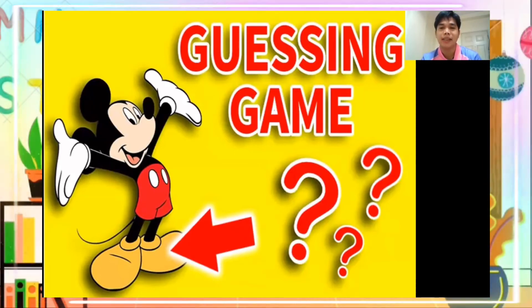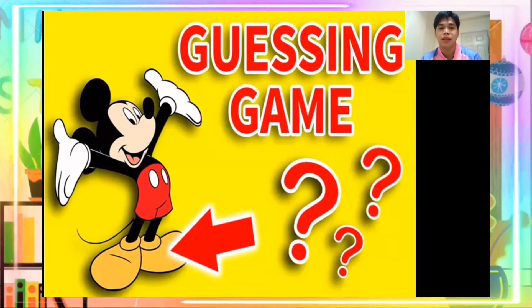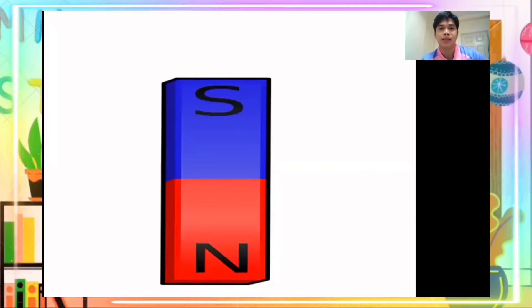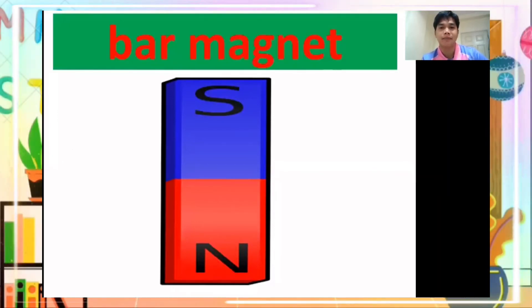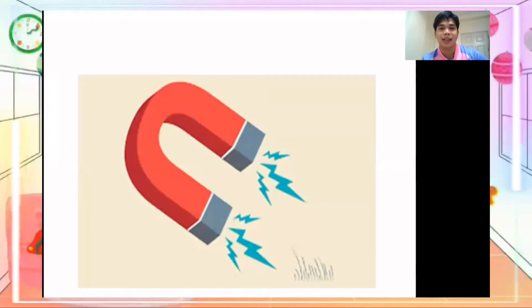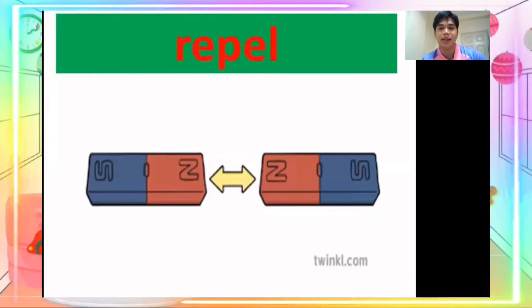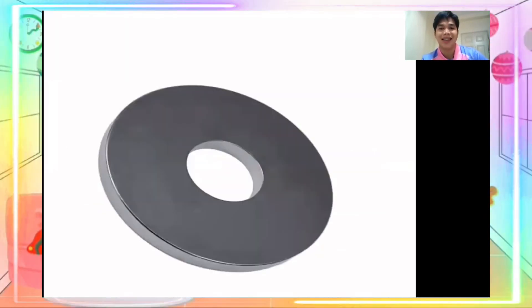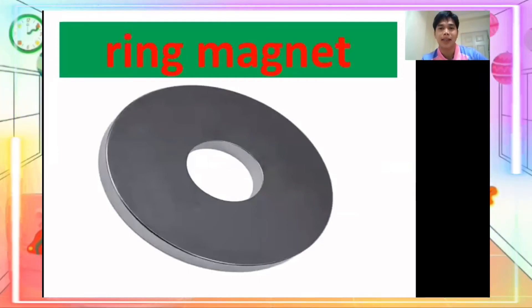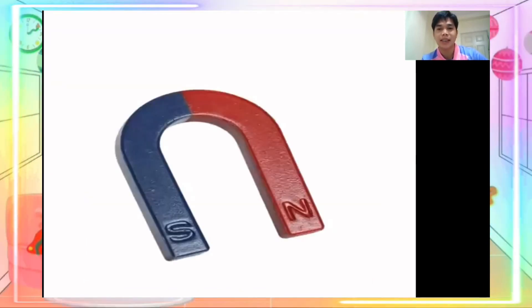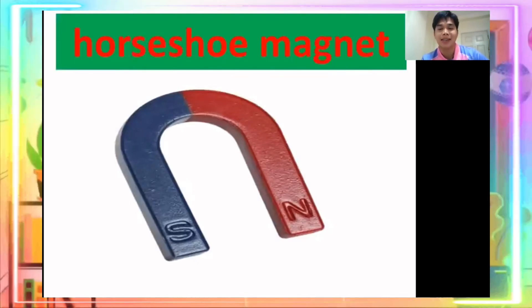Now let's have a guessing game! You are going to find the word or the type of magnet. What type of magnet is it? Very good — bar magnet! What magnet is it? It's attract. How about this one? Repel — very good! Next — ring magnet, very good! Next — circular magnet.